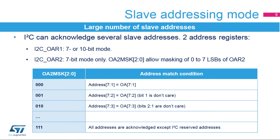The I2C slave can acknowledge several slave addresses. The slave addresses are programmed into two registers. Own Address Register 1 can be programmed with a 7- or 10-bit address. Own Address Register 2 can be programmed with a 7-bit address, but the least significant bits of this address can be masked through the OA2MSK register in order to acknowledge multiple slave addresses. The two Own Address registers can be enabled simultaneously.